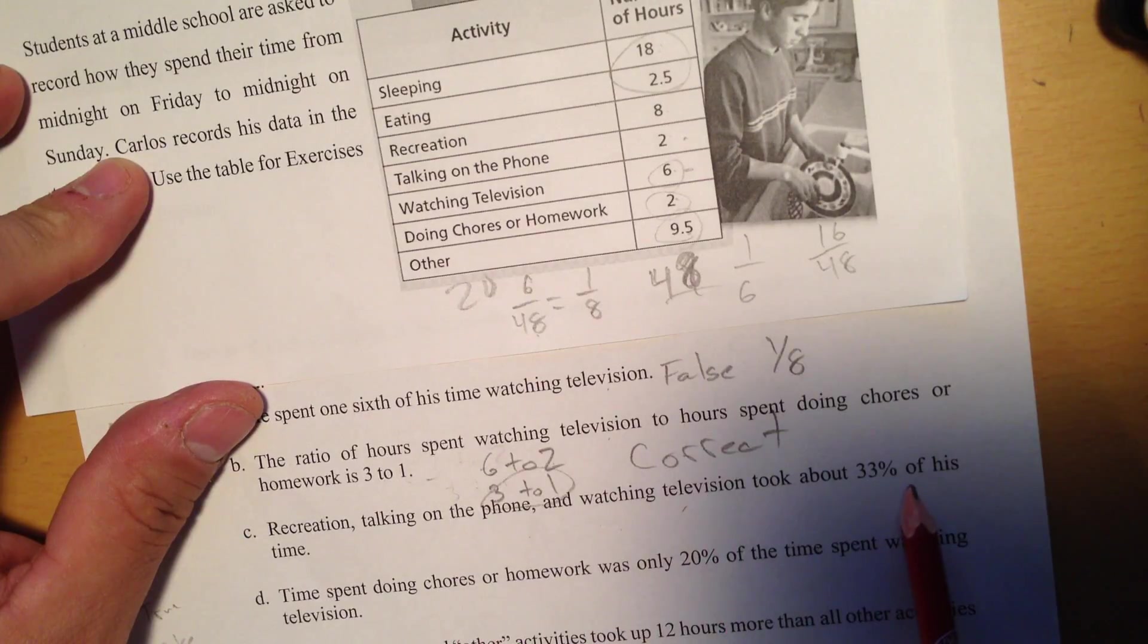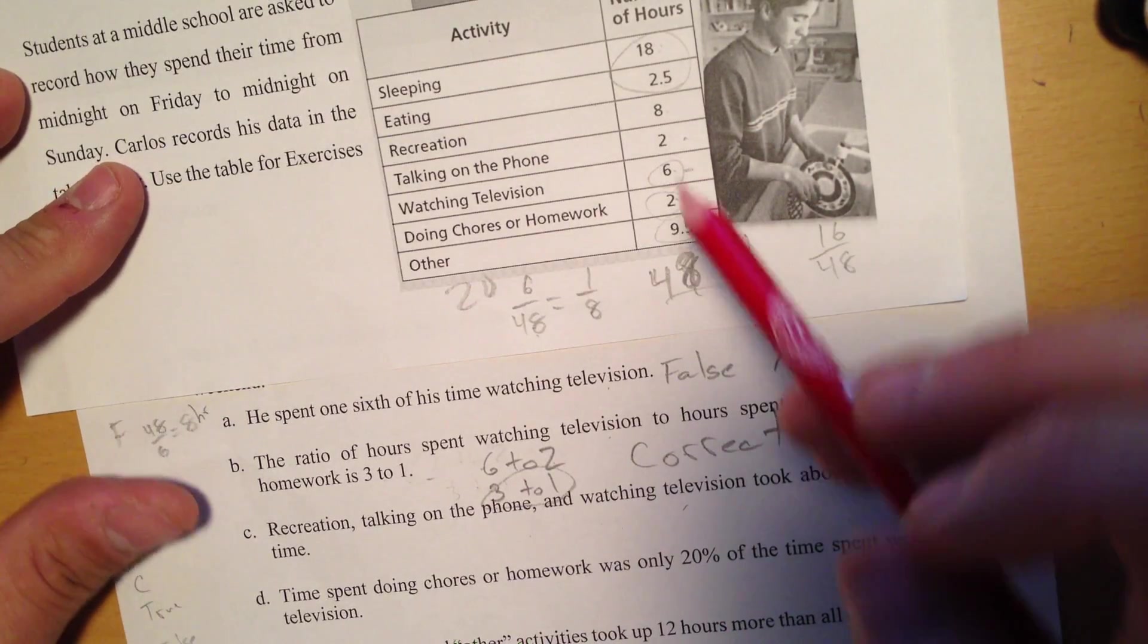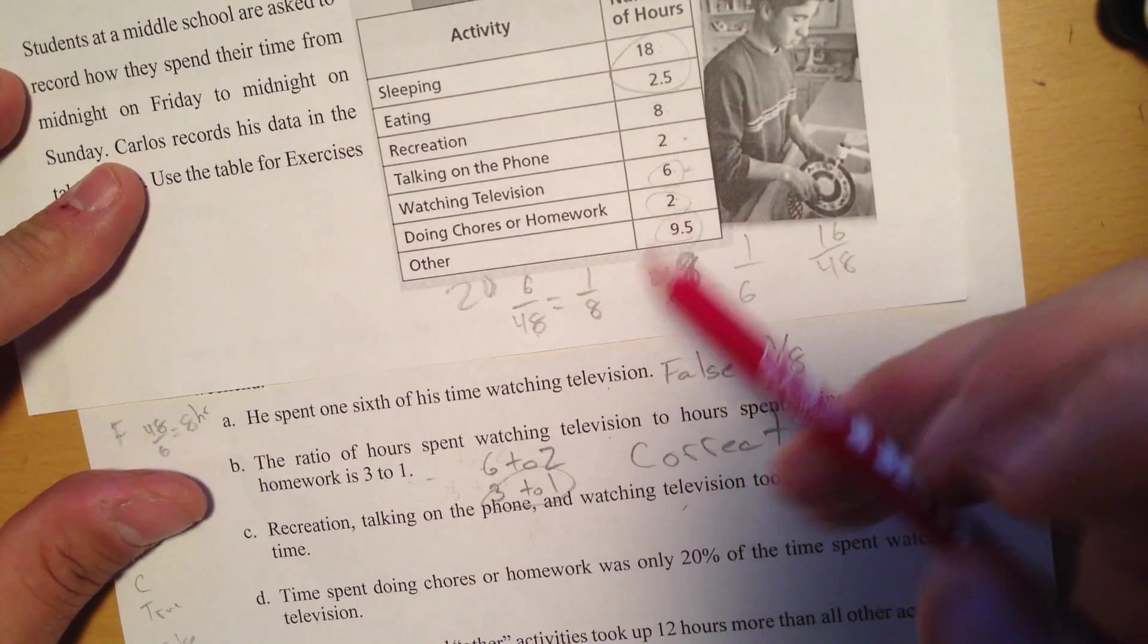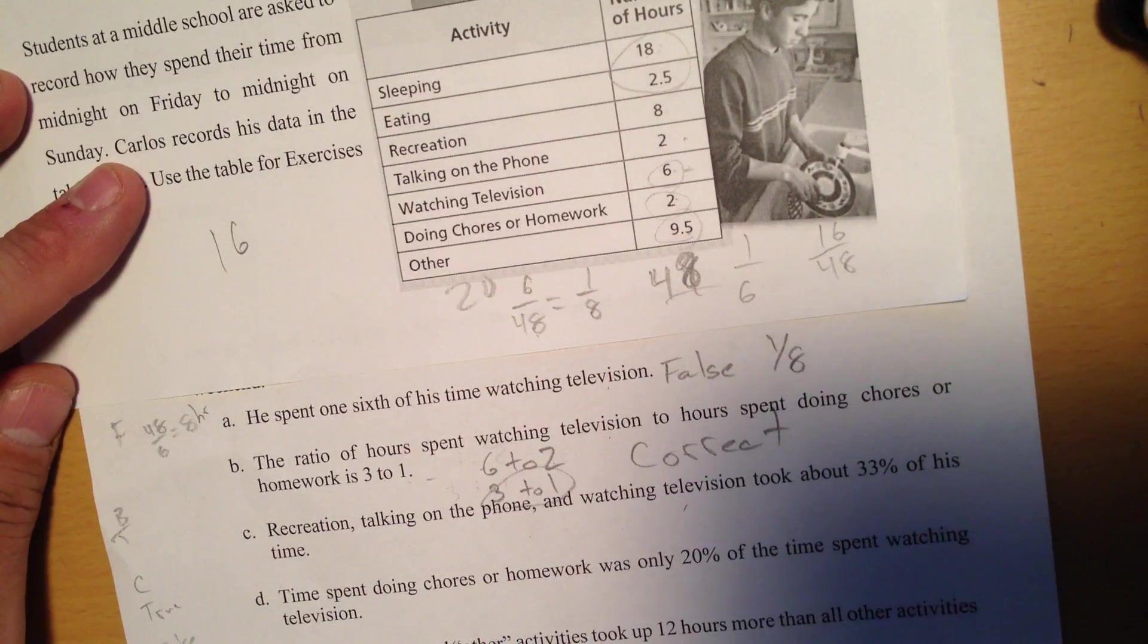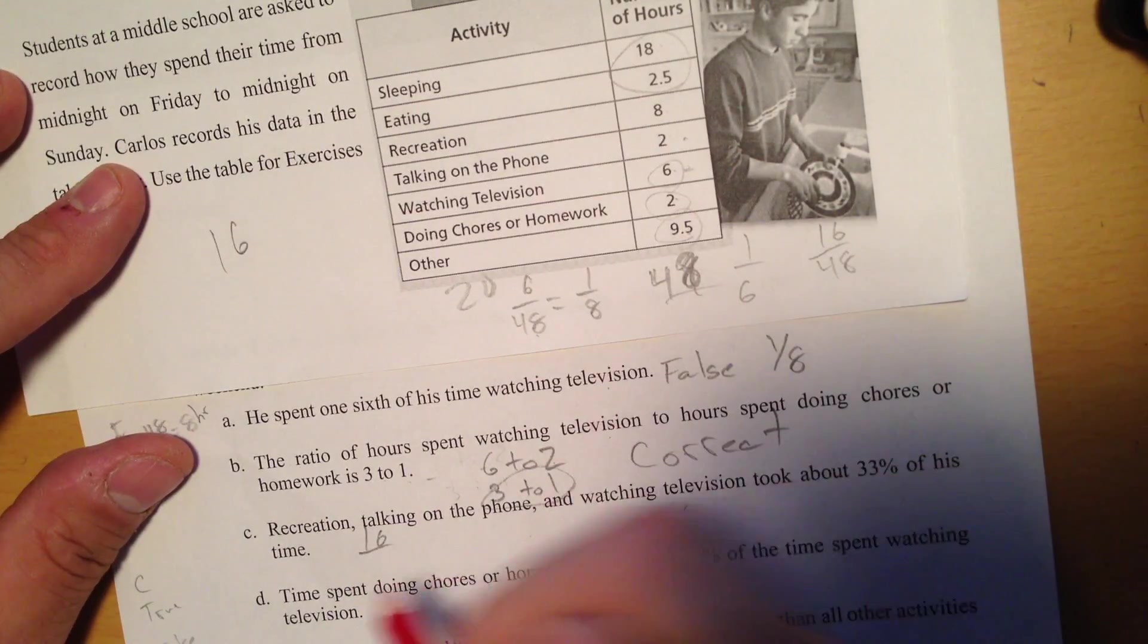Recreation, talking on the phone, and watching television is about 33% of his time. So recreation is 8 hours, talking on the phone is 2, that's 10, watching television, so I'm talking 16 hours.